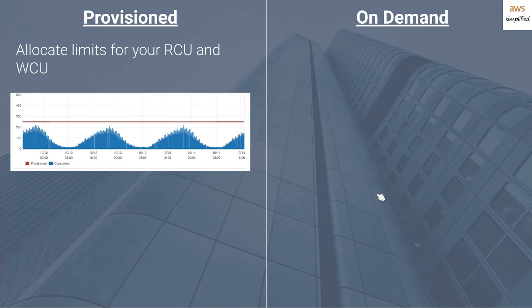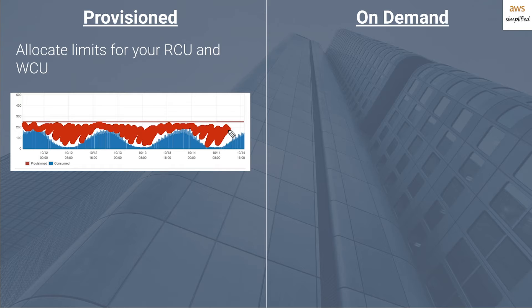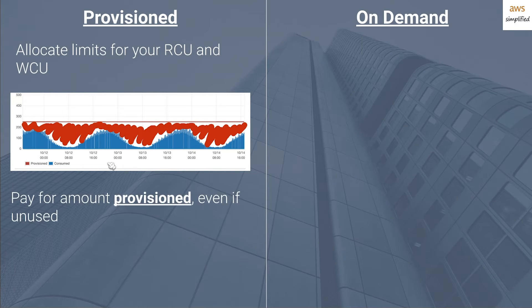In this image the blue corresponds to the usage and the red line corresponds to the provisioned usage. Everything I'm drawing in here — this is waste that you are paying for that you're not necessarily using. You're wasting quite a bit of money by using just a normal fixed provisioned capacity on this table. In the provisioned world we pay for the amount provisioned even if it is unused. So in this example even though at 1600 I'm using only approximately 150 RCUs, we will be paying for 250 RCUs, which is the red line.